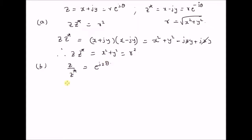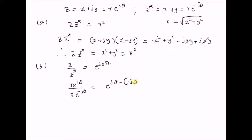Starting with the LHS, we have z given by r times e power j theta and z star given by r times e power minus j theta. The ratio is equal to e power j theta minus of minus j theta, which is clearly equal to e power j times 2 theta.